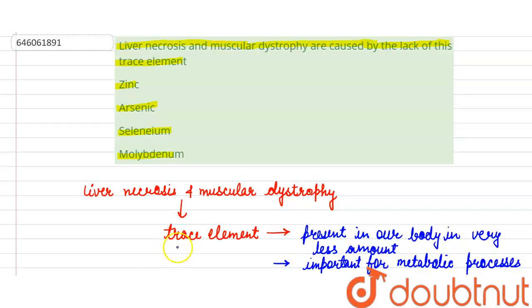And a lack of these trace elements can cause a number of diseases. So liver necrosis and muscular dystrophy are caused by the lack of selenium in the body, which is associated with increased risk of cardiovascular diseases.